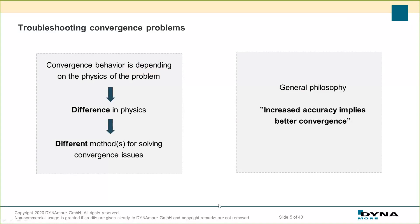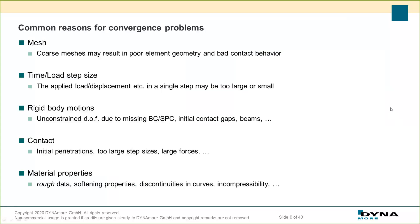Two main principles for troubleshooting convergence in LS-DYNA: first, convergence behavior depends on the physics of the problem — there is not a unique set of control cards that works in every model. If the physics in your model change, you should also change your method for solving convergence issues. Second, it is usually best to increase accuracy to imply better convergence. Keep these two principles in mind for the rest of this webinar.